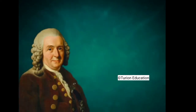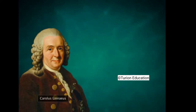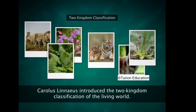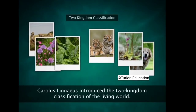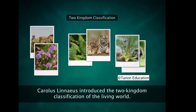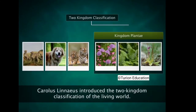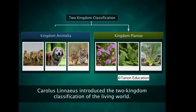Carolus Linnaeus, the father of taxonomy, divided the living world into two kingdoms: Kingdom Plantae and Kingdom Animalia.